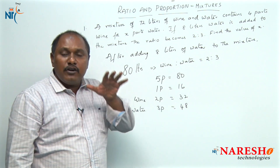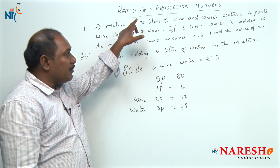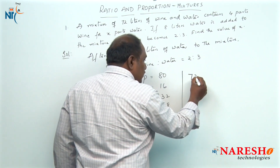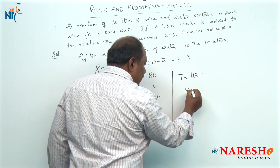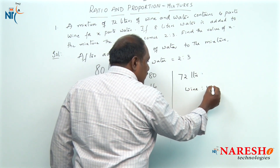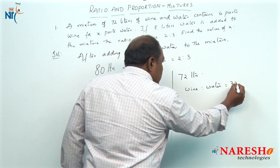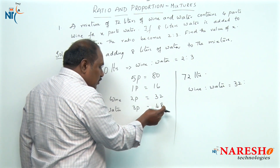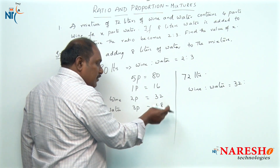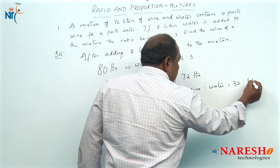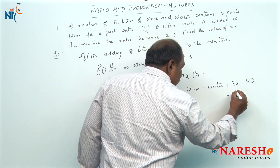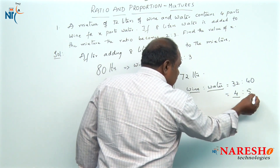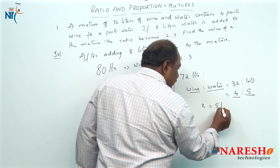That means the initial quantity of water in the 72 liters of mixture should be only 40 liters. So in the 72-liter mixture, wine is 32 liters and water is 40 liters — after adding 8 liters the total water becomes 48. So the ratio is 4 is to 5, meaning if wine is 4 parts, water is 5 parts. So the value of x should be 5.